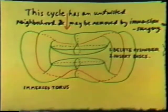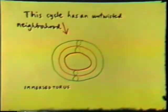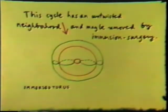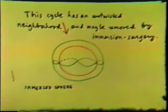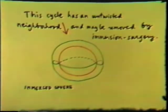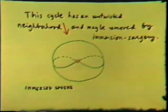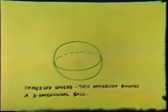We delete the cylinder, then insert the disks. We now have an immersed torus. We straighten this torus out and shrink it a bit. The cycle that goes around the center has an untwisted neighborhood and may be removed by immersion surgery. That cycle is gone; we now have an immersed sphere. The sphere is regularly homotopic to an embedding. The sphere now bounds a ball, and immersion surgery takes it to zero.